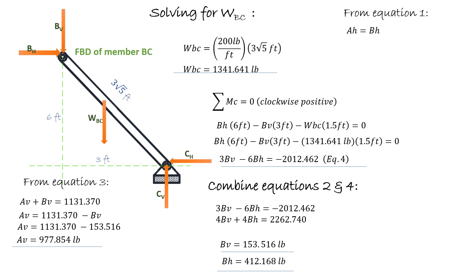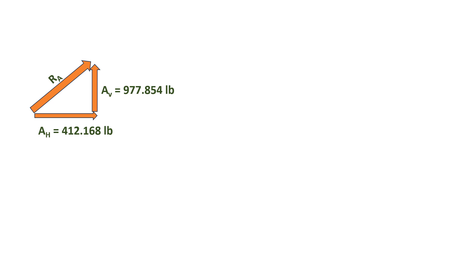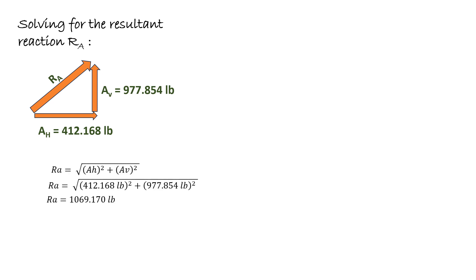From Equation 1, we know AH equals BH. Substituting the value of BH, we get AH = 412.168 pounds. Since force is a vector, we can solve for its resultant using the Pythagorean theorem with its components AV and AH. The reaction force acting at pin A is therefore 1069.170 pounds.